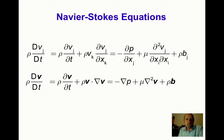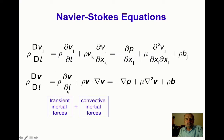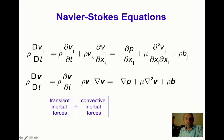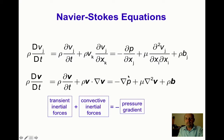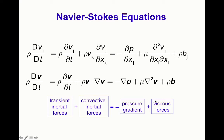These are the Navier-Stokes equations. The term rho del V / del t is the transient inertial force and rho (V dot grad) V is the convective inertial force — both are mass per unit volume times acceleration. Together they constitute the net inertial force. The remaining terms are the pressure gradient, the viscous forces, and the body forces — five terms in total — representing conservation of linear momentum for an incompressible Newtonian fluid.